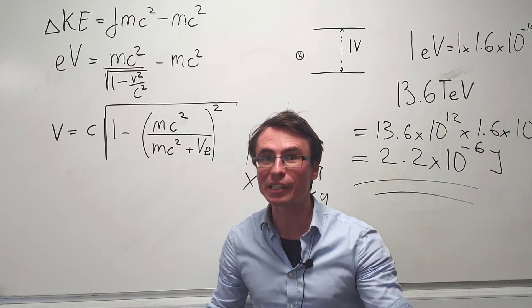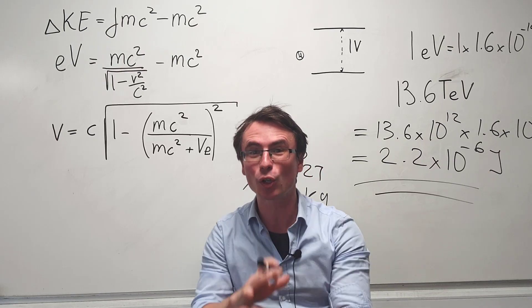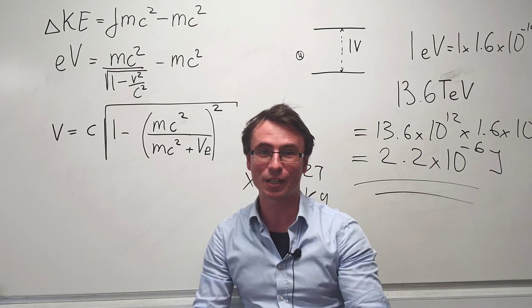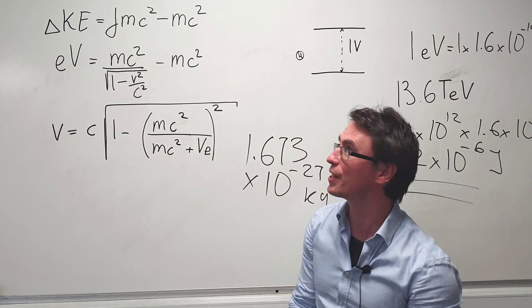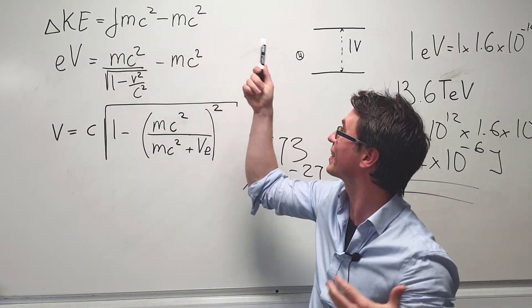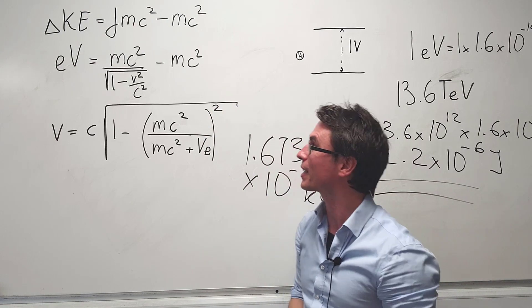The protons reach such high speed that we absolutely cannot use the classical equations of physics. In the relativistic theory the change in kinetic energy is given by gamma mc squared minus mc squared, which is the rest mass of the protons.